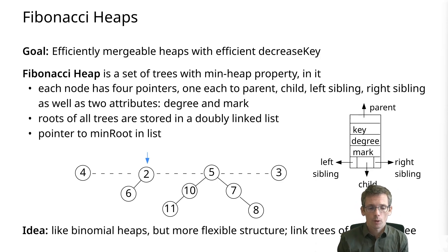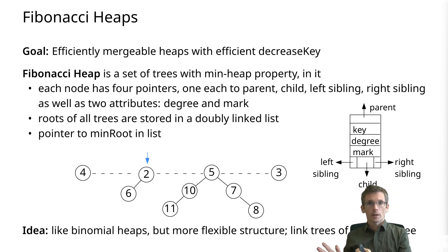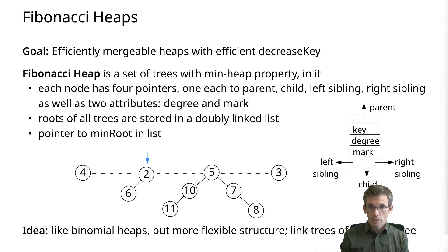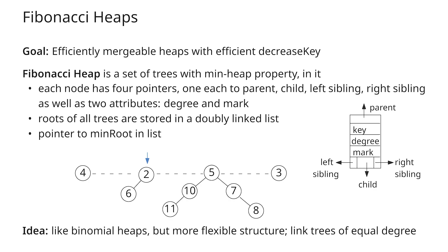We will store the following information for every node: the parent, the leftmost child, the left sibling, the right sibling, the key, and the degree. The degree will be used to decide which trees to merge — very similar to binomial trees, where we also merge trees of the same degree. But there we had the property that those were actually the same trees; this is not the case anymore. And then there's also the mark, which I'll talk about later.